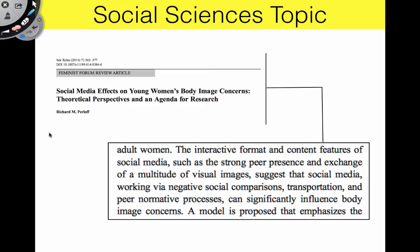Let's look at an example from the social sciences — research conducted in the discipline of communication. The title of the paper tells you the subject matter: social media effects on young women's body image concerns. However, the author also needs to give you a claim about social media — what he thinks social media creates, causes, or affects. His claim is that because social media are interactive and you can share images, there may be a relationship between exposure to social media and body image concerns.